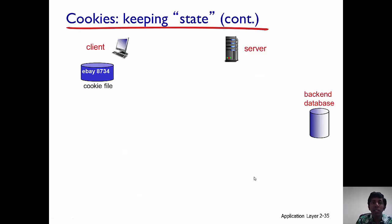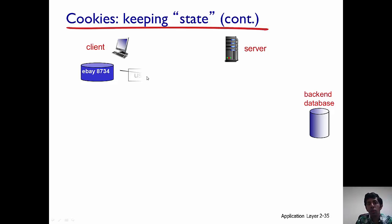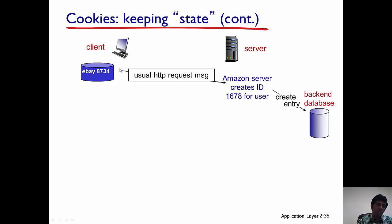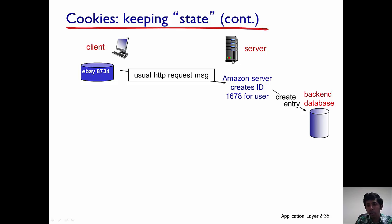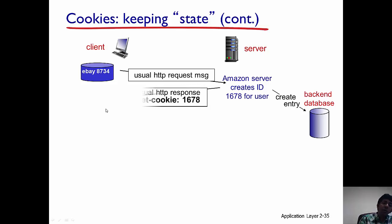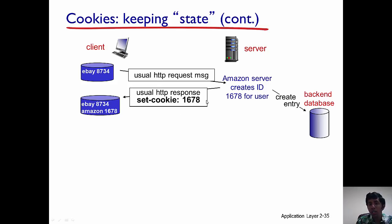Let's look at this in an animated way. Let's assume this client has already visited eBay, so there is a cookie file on the client's computer for eBay. Now the client is visiting amazon.com for the first time. It sends the first HTTP request message to amazon.com. The server creates a cookie and an entry at the back-end database. The ID created for this user is 1678, and the HTTP response message is sent back with the header 'set-cookie: 1678'.